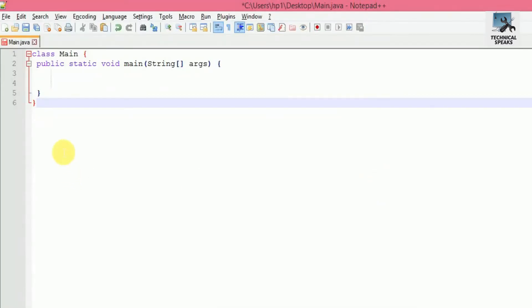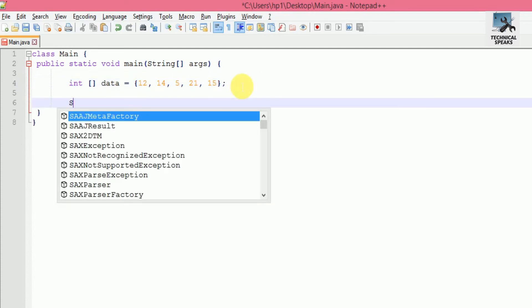First, using index numbers. Here we create a class like class Main. Inside it, create the main method like public static void main String args. Now we are going to create an array data of int data type: int data equals {12, 14, 5, 21, 15}. To access each array element, we need to add the print